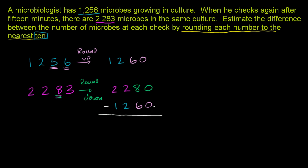0 minus 0 is 0. 8 minus 6 in the tens place—it's really 80 minus 60—that's 2, or 20. 2 minus 2 is 0, and 2 minus 1 is 1. So when we rounded each number to the nearest 10 and then took the difference, our estimated difference is 1,020.